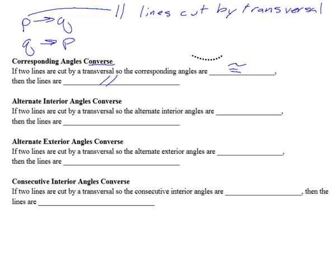The alternate interior angle converse states that if two lines are cut by a transversal so that the alternate interior angles are congruent, then the lines are parallel. Alternate exterior angles, if the exterior angles are congruent, we can say the lines are parallel. And then the consecutive interior ones, that was when the angles were supplementary. So if the consecutive interior angles are supplementary, then we can say that those lines are parallel.